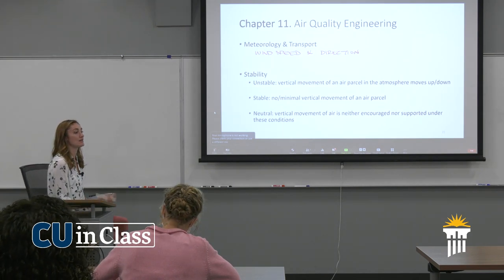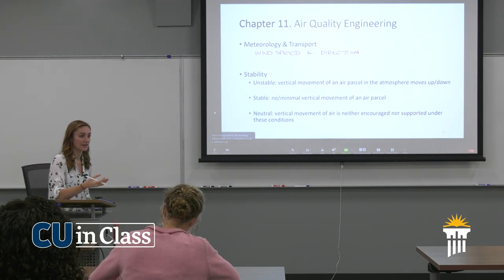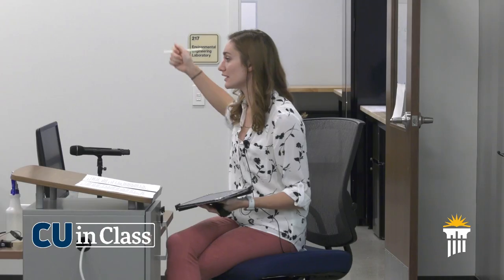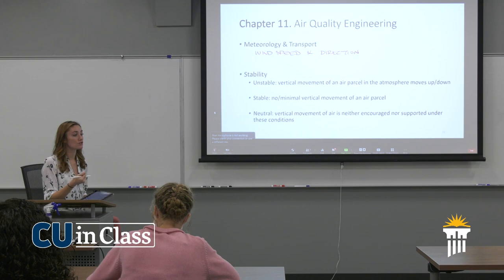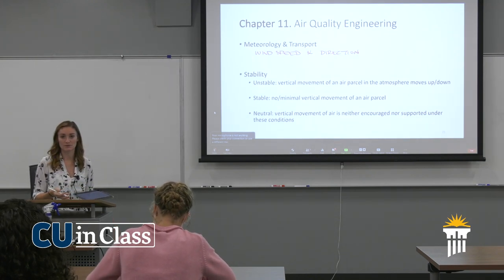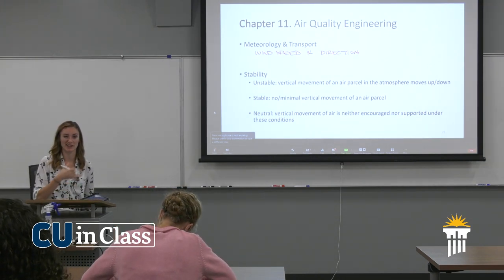Stability informs what our plume actually looks like coming out of a stack — will it be wobbly, go straight up and deposit far down the line, or stay low to the ground? Neutral conditions are unpredictable; we don't know if they'll behave more like stable or unstable, so there's a wider range of possible outcomes.